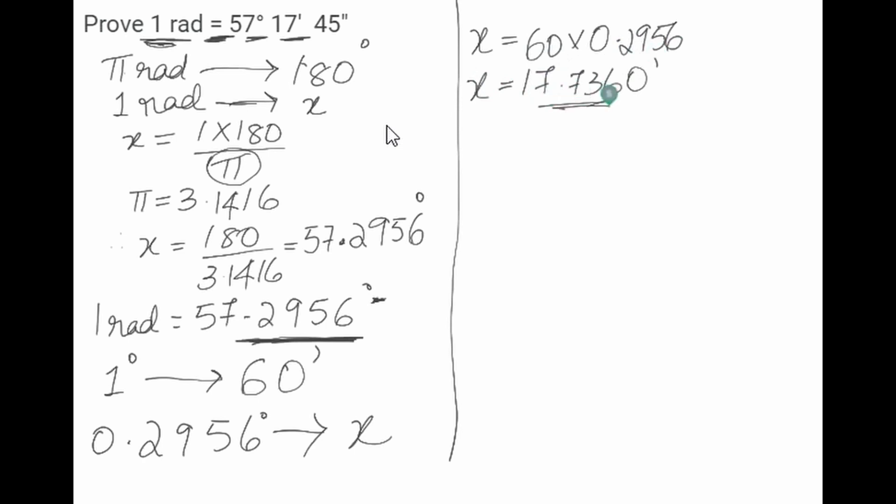x is equal to 60 into 0.2956, which would be, therefore, 0.2956 degrees in minutes would be 17.7360.